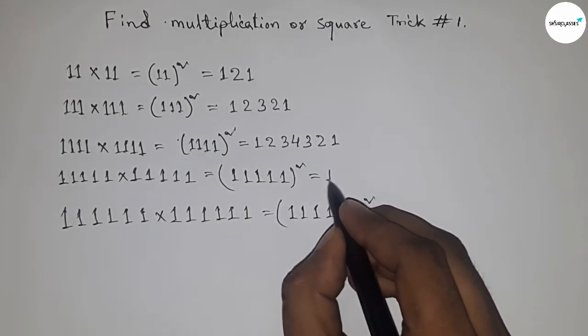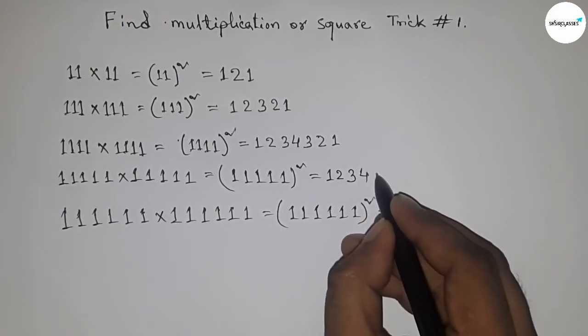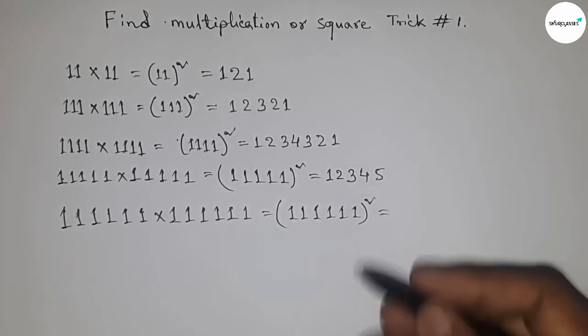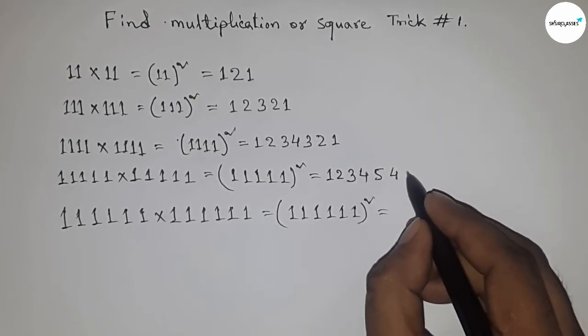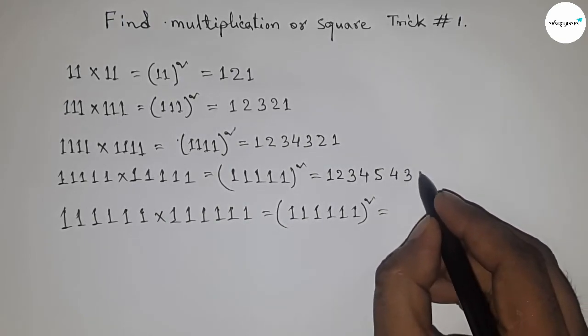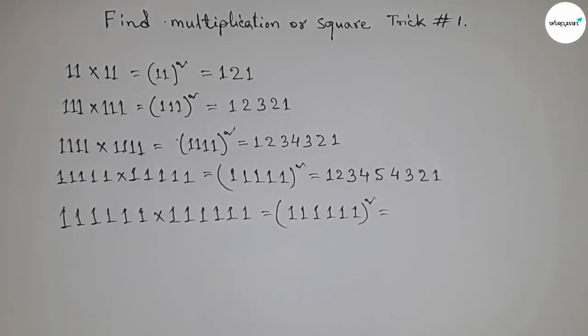Next, here multiplying five ones with five ones. So first write down 1, 2, 3, 4, 5. Then reversely, first write 4, then 3, 2, 1.